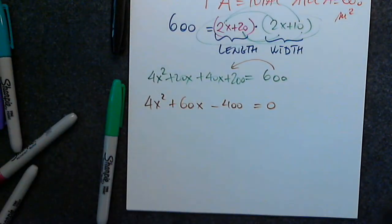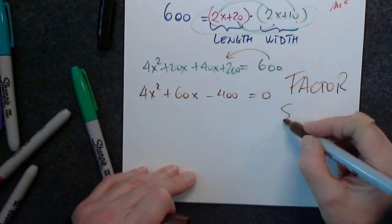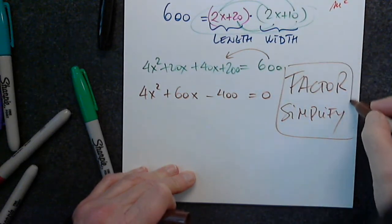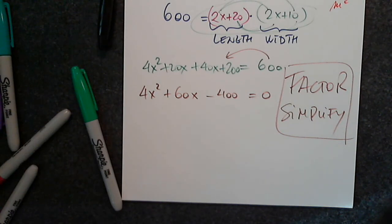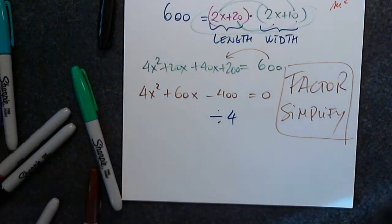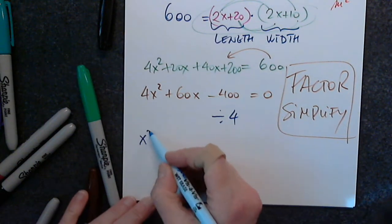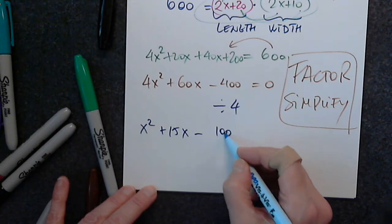Two key words to remember: factor and simplify. This is a quadratic equation — divide both sides by 4 to simplify. I want numbers as small as possible. So we get x squared plus 15x minus 100 equals 0. Now it's completely cleaned up and I have four methods of solving.